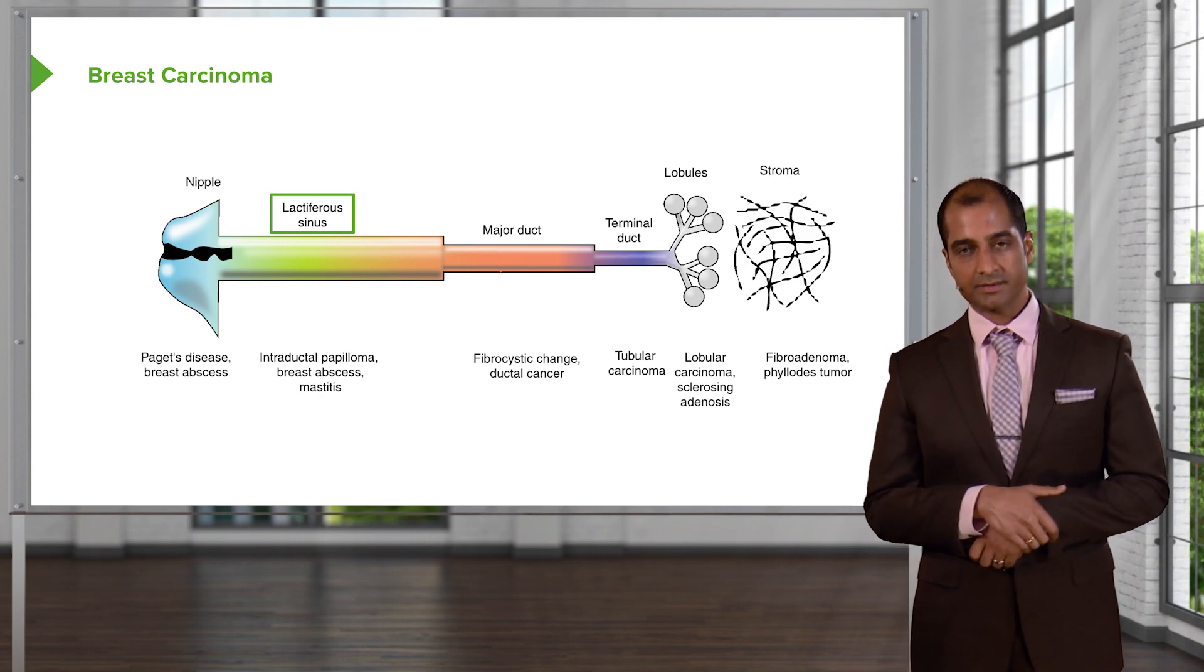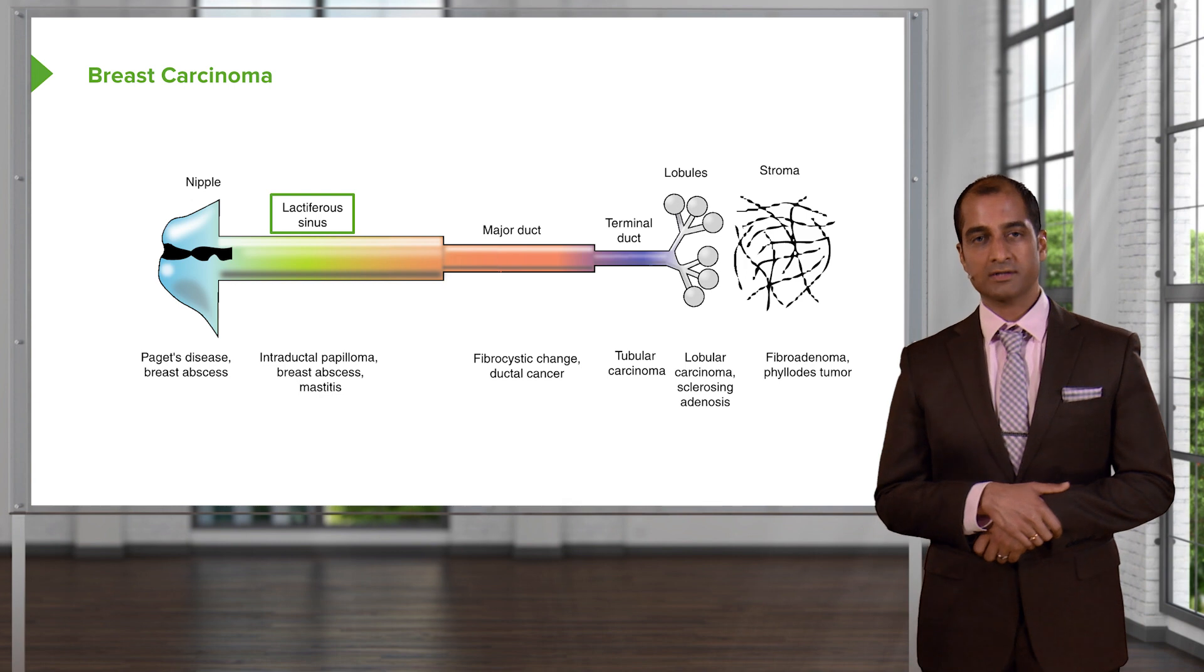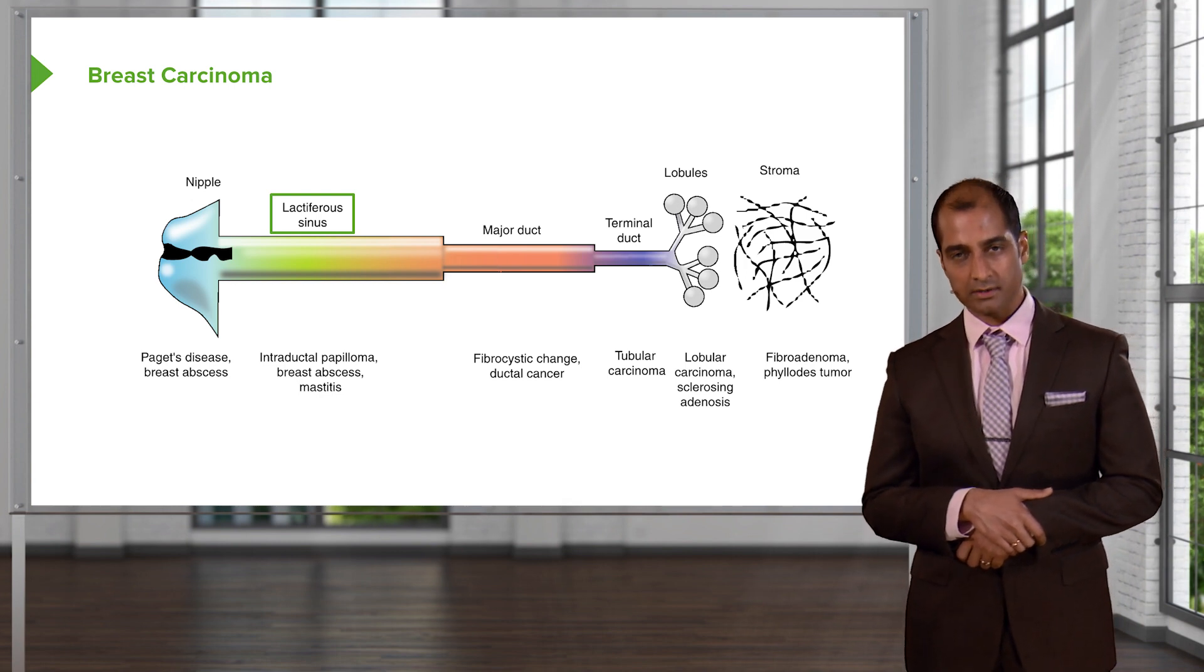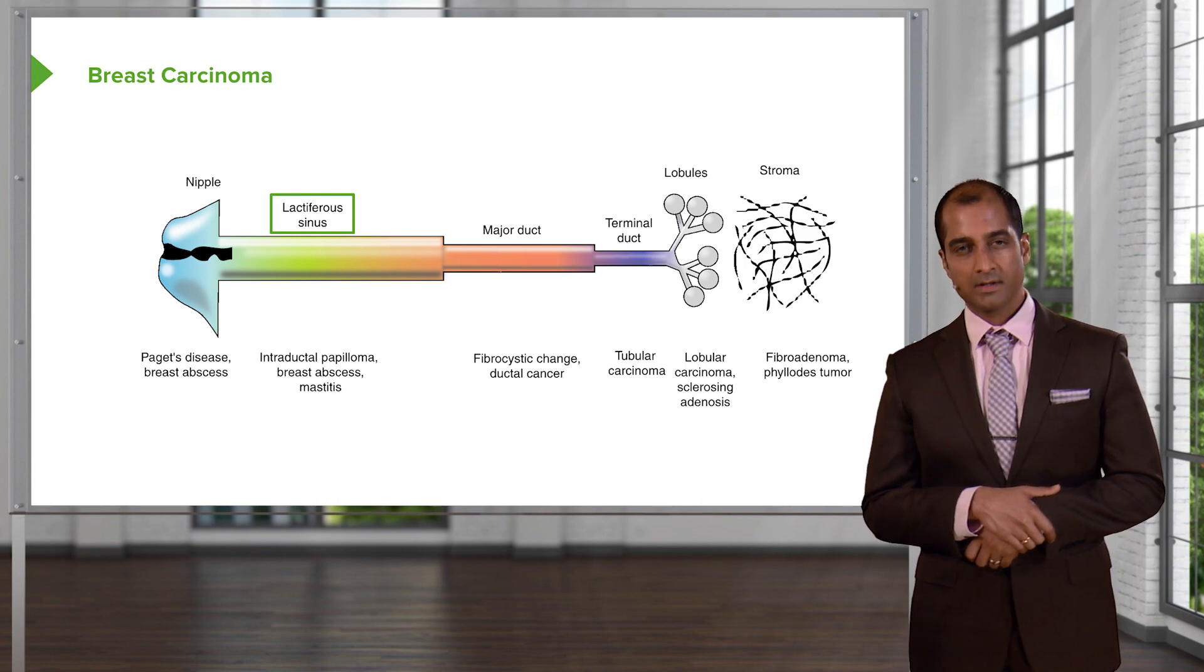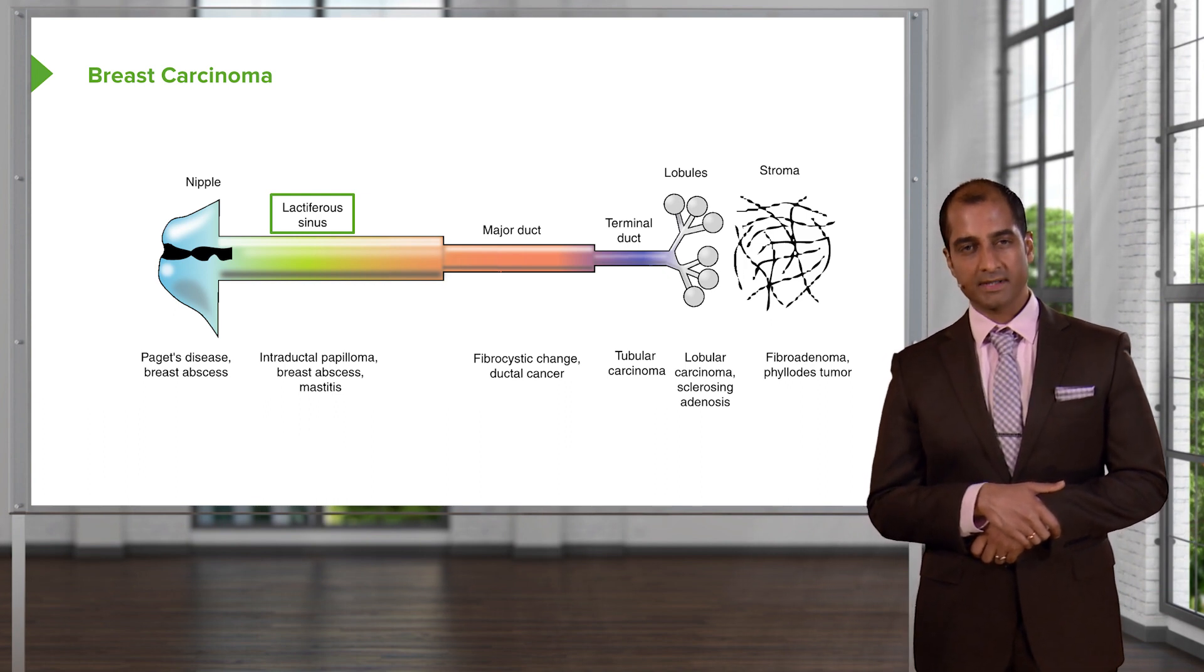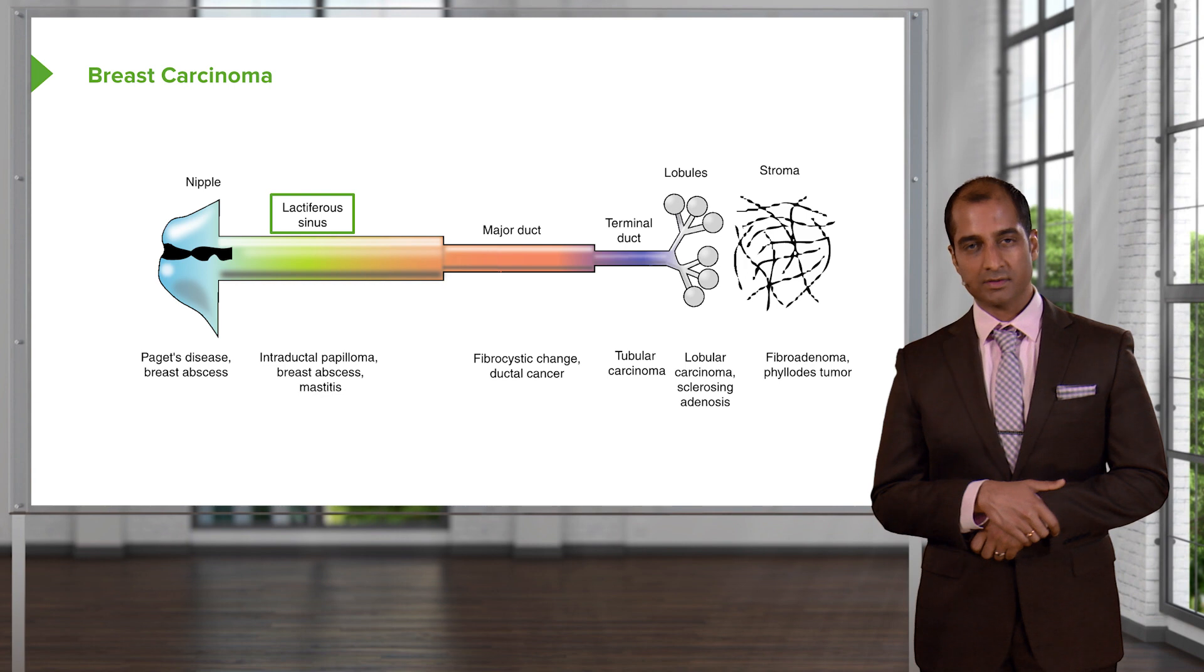After this, we'll get into our ducts. You have a big major duct and you have a little terminal duct. Group them together, please, and you call them ductal. In the previous discussion, we began with malignancy. We looked at ductal carcinoma in situ.